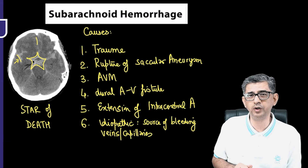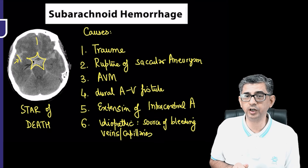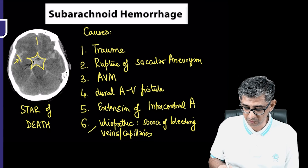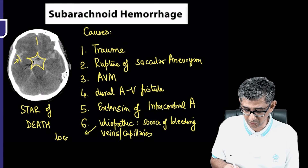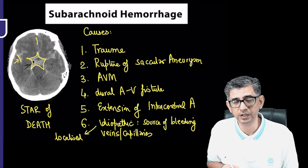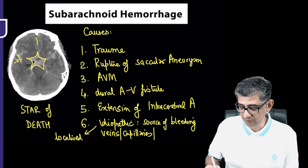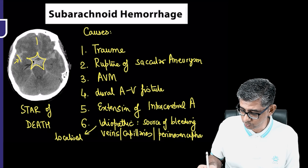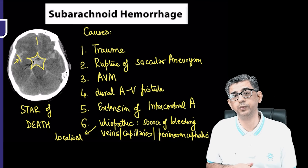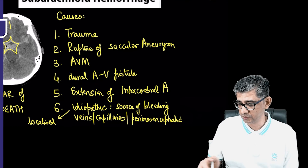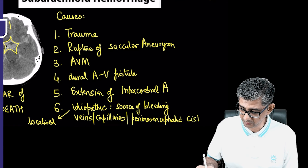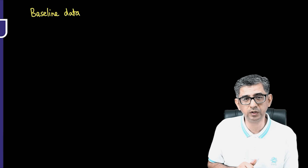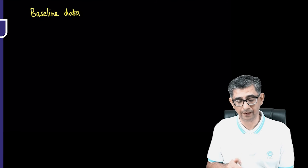To summarize: routinely the answer for SAH bleeding source is arterial, but for the idiopathic variety your answer would be veins or capillaries. This idiopathic variety is relatively localized, and because it is localized, it tends to have a relatively benign course. If asked about the usual location, the idiopathic variety of subarachnoid hemorrhage is commonly located at the mesencephalic cisterns. These are the six causes responsible, with trauma being the number one cause.